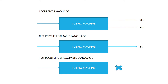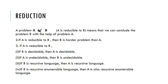Now we will move on to reduction. What is reduction? Problem A is reducible to B means we can solve problem B with the help of problem A. If A is reducible to B, then B is the harder problem. A real-life example: if you are a professional builder and you have made a house, then obviously you have also made a kitchen and a room. Making a house is a harder problem than making a kitchen or a room.